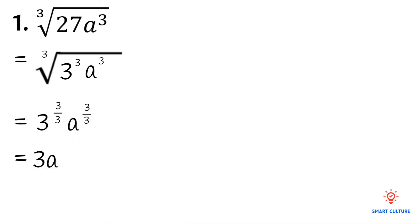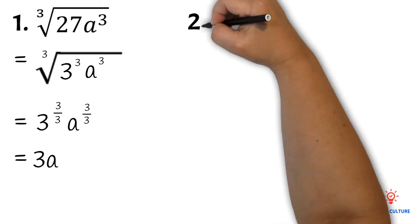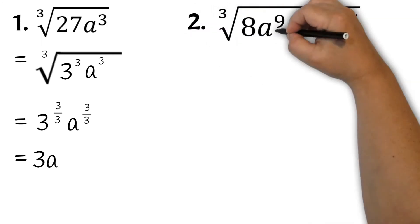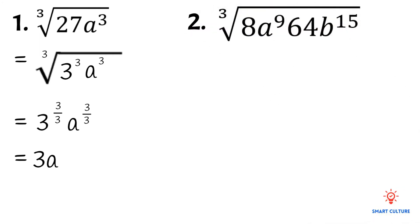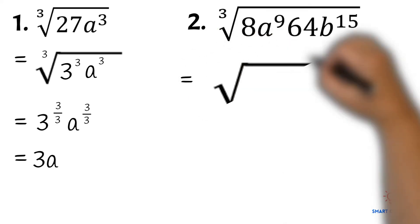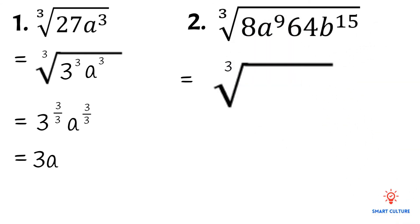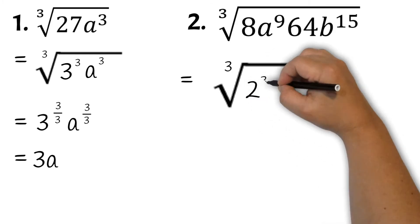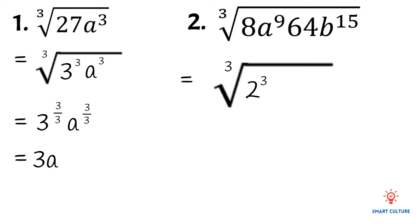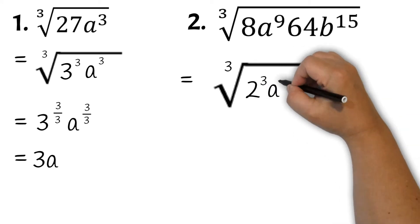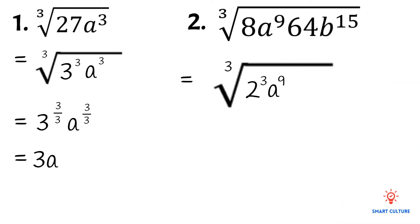Let's take a look at the next example. Here we have to find the cube root of 8a to the power of 9 times 64b to the power of 15. We'll write 8 as a product of its factors — 2 cubed, since 2 cubed equals 8. We also write 64 as a product of its factors: 4 times 4 times 4 equals 64, so we write 4 cubed, and then b to the power of 15.